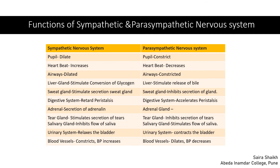During sympathetic nervous system activation — fight and flight, emergency conditions — the pupil dilates, heartbeat increases, airways dilate, the liver stimulates glycogen conversion, sweat glands stimulate sweat secretion, digestive system peristalsis gets retarded, adrenal secretion increases, tear glands are stimulated, salivary glands inhibit saliva flow, the urinary bladder relaxes, blood vessels constrict, and blood pressure increases.